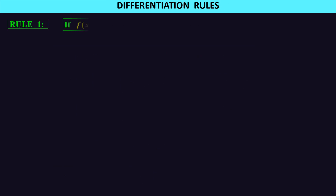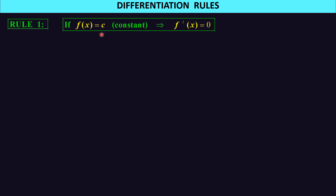Let's look at the rules we're going to apply. The first rule is if f(x) is a constant — in other words you have a horizontal line — the gradient of a horizontal line is always equal to zero. So if I have f(x) equal to 20, the derivative is 0. f(x) equal to 2000, derivative is 0. f(x) equal to pi, the derivative is 0.